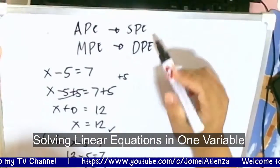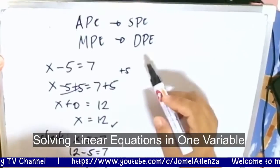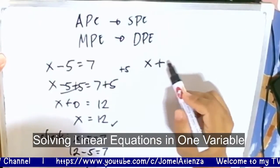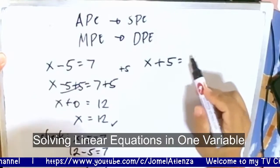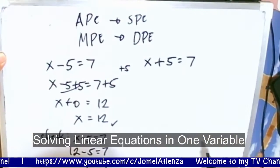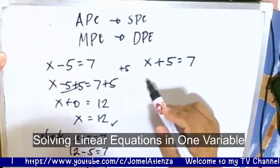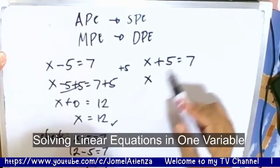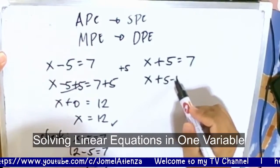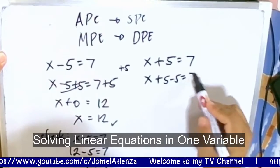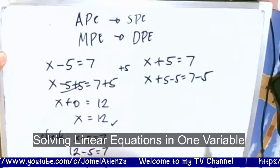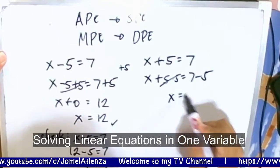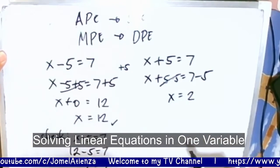Now, what about the subtraction property of equality? Let's say we have x plus 5 is equal to 7. We are going to subtract both sides of the equation by 5. So x plus 5 minus 5 is equal to 7 minus 5. The 5s cancel out, so x is equal to 2.